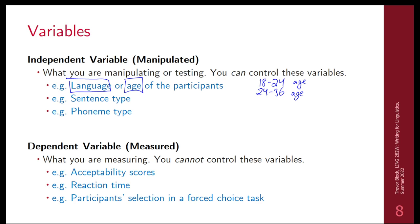The measurements — the dependent variables — you cannot control. Participants are going to respond in some way, and that is out of your control. You can tell them how you want them to respond, but you can't control their responses. Things like naturalness ratings, acceptability scores, reaction time, or which option they choose from a set of options — whichever one they pick is out of your control. These are measured variables called dependent variables.